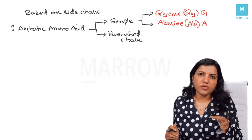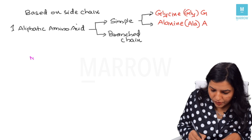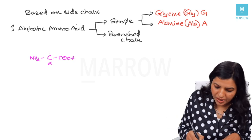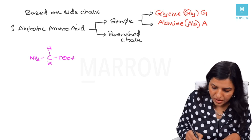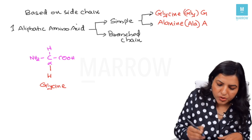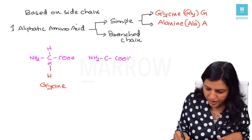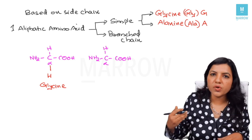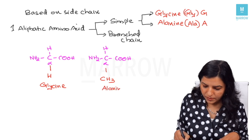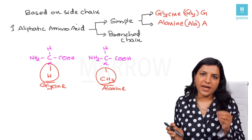You do not have to learn all 20 structures — only the important ones. Glycine: you start with the amino group, then the alpha carbon attached to COOH, and to the alpha carbon only one H is attached as the side chain — that is glycine. For alanine, draw the common structure: NH2, C, COOH, H, and the side chain is CH3. That is alanine. By seeing the side chain you can identify which amino acid it is.